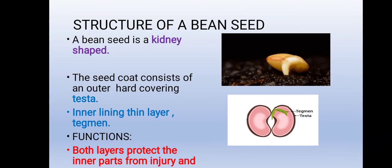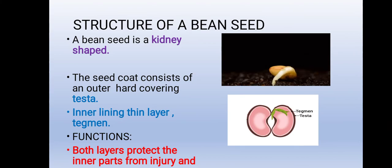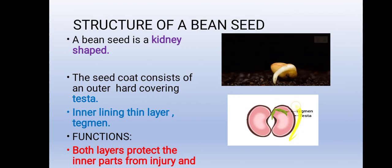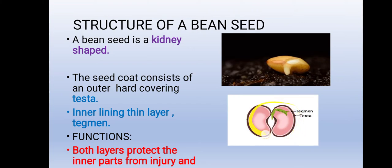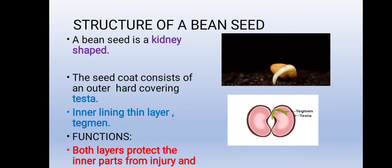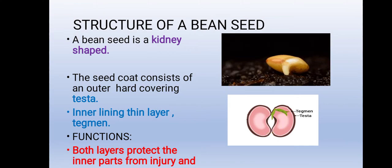A bean seed is kidney shaped. The seed coat consists of an outer hard covering known as the testa, and the inner lining layer is known as the tegmen. The main function of these layers is protection from injury.